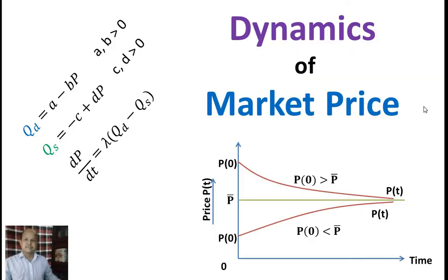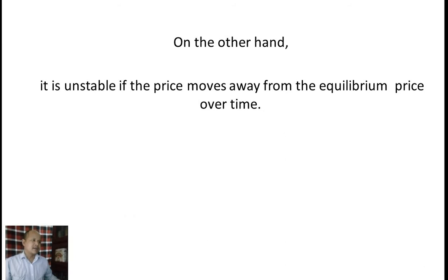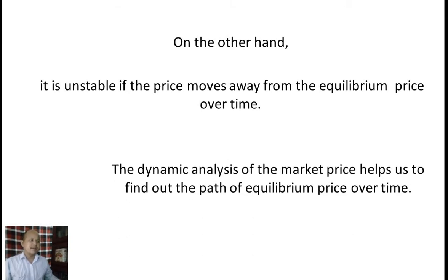Good morning. Through this video, we explain dynamics of market price. Market equilibrium is said to be dynamically stable if the price converges to the equilibrium price over time. On the other hand, it is unstable if the price moves away from the equilibrium price over time. The dynamic analysis of the market price helps us to find out the path of equilibrium price over time.